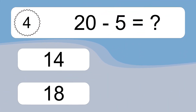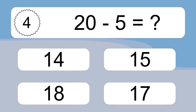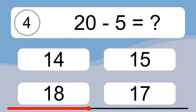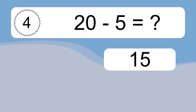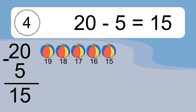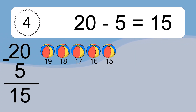20 minus 5 equals what? 20 minus 5 equals 15. Let's count it: 19, 18, 17, 16, 15.